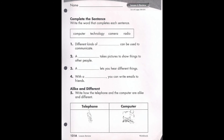Number 1 says: different kinds of blank can be used to communicate. Is it computer, technology, camera, or radio? Number 2 says: a blank takes pictures to show things to other people. Number 3 says: a blank lets you hear different things. Number 4 says: with a blank, you can write emails to friends.